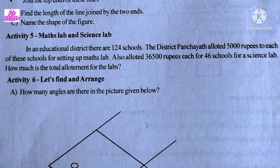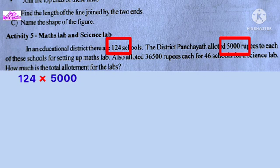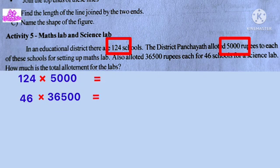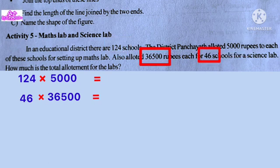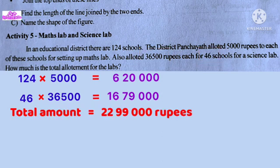Activity 5: Maths Lab and Science Lab. In an educational district, there are 124 schools. The district allotted 5,000 rupees to each school for setting up a Maths Lab and 36,500 rupees each for 46 schools for a Science Lab. How much is the total allotment for the labs?